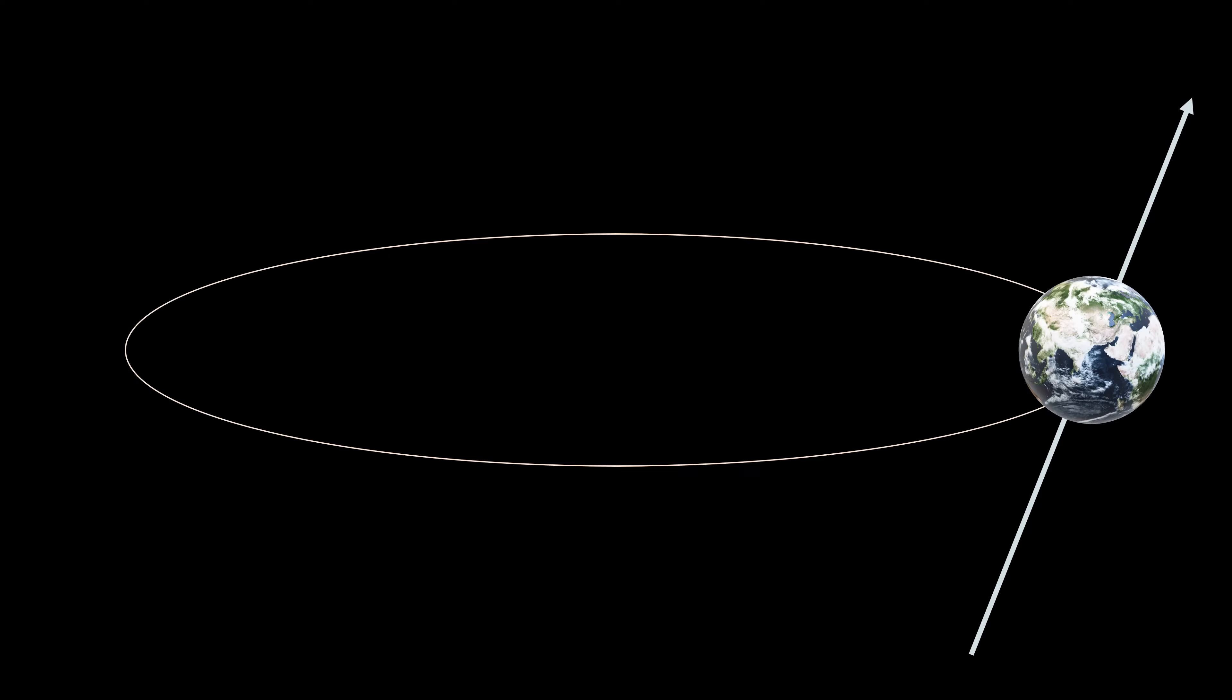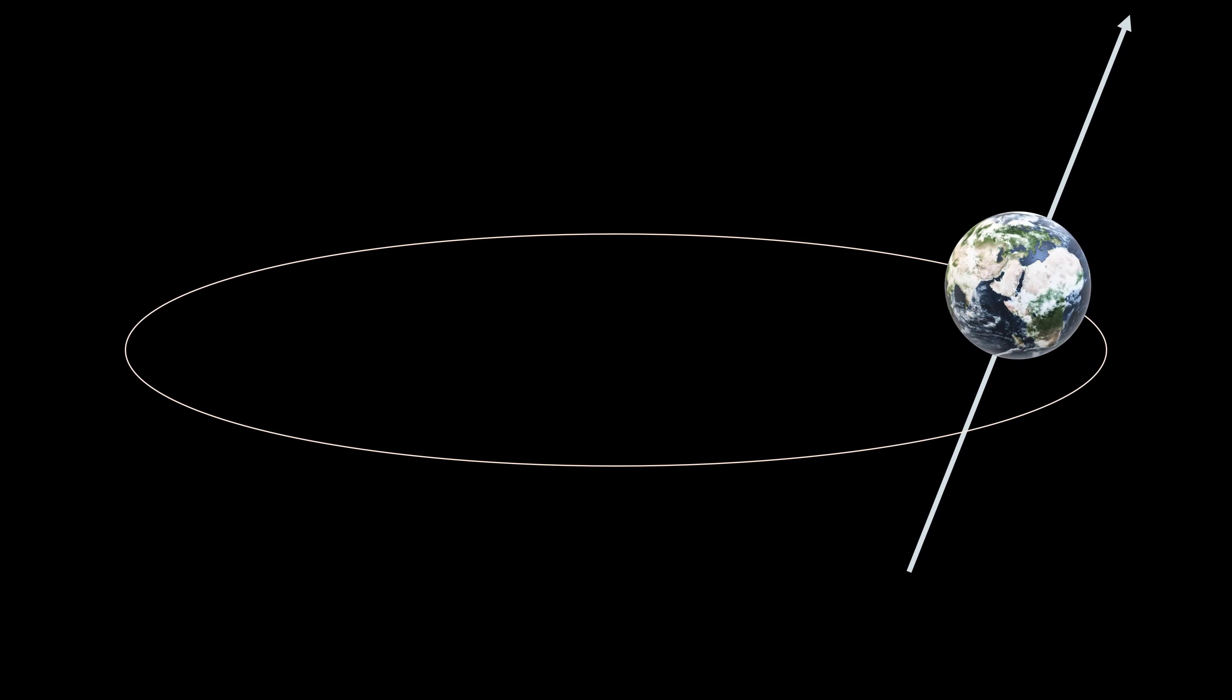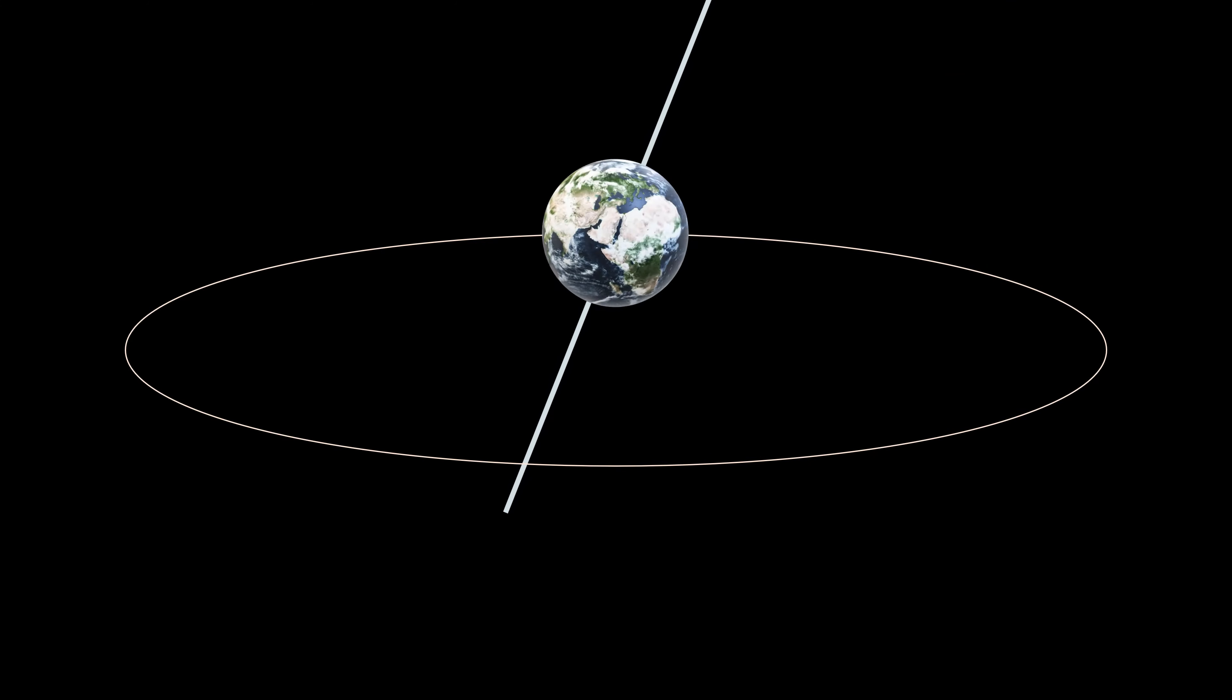As the Earth revolves around the Sun, the axis of rotation remains the same, but the hemisphere facing the Sun changes.